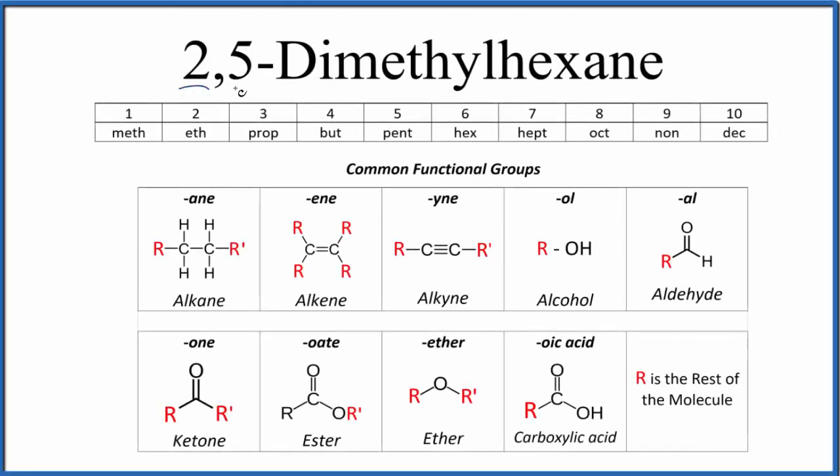Let's write the structure for 2,5-dimethylhexane. The first thing we notice when we look at 2,5-dimethylhexane is it ends in A-N-E. That A-N-E means it's an alkane. It's going to be all carbon atoms, and we're going to have single bonds.